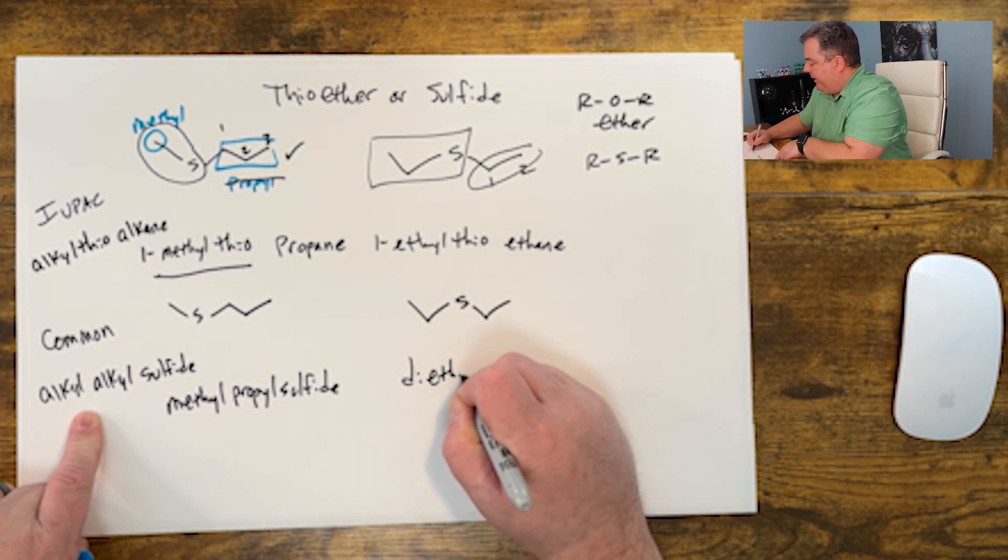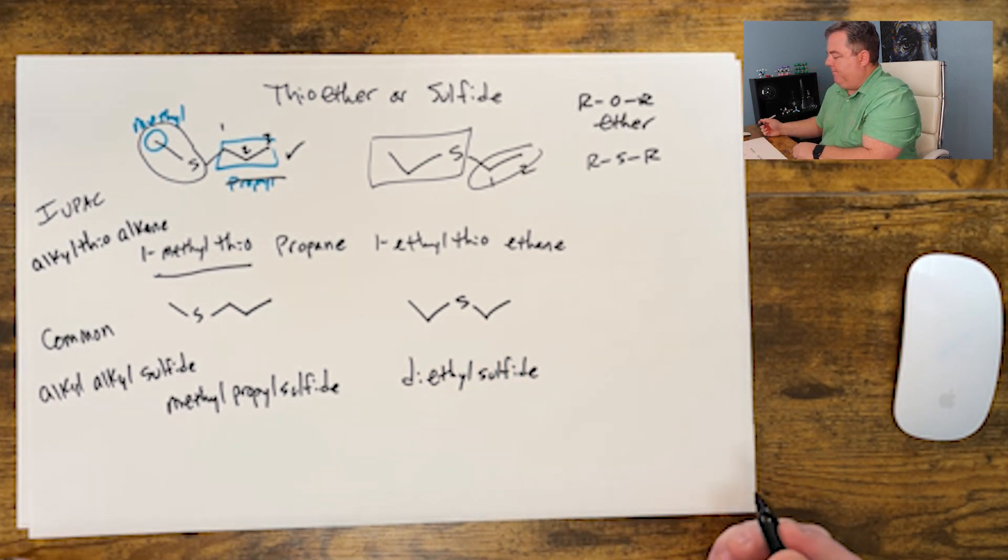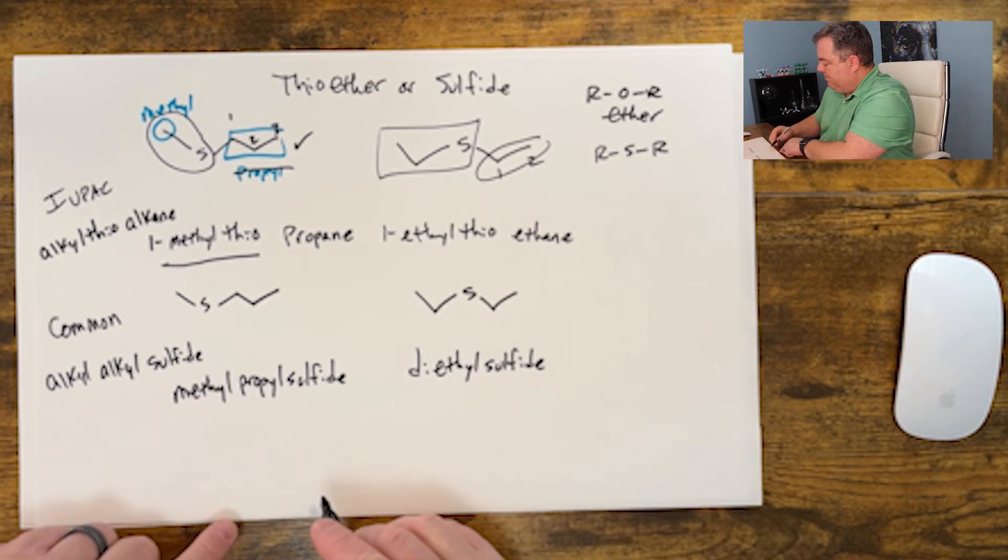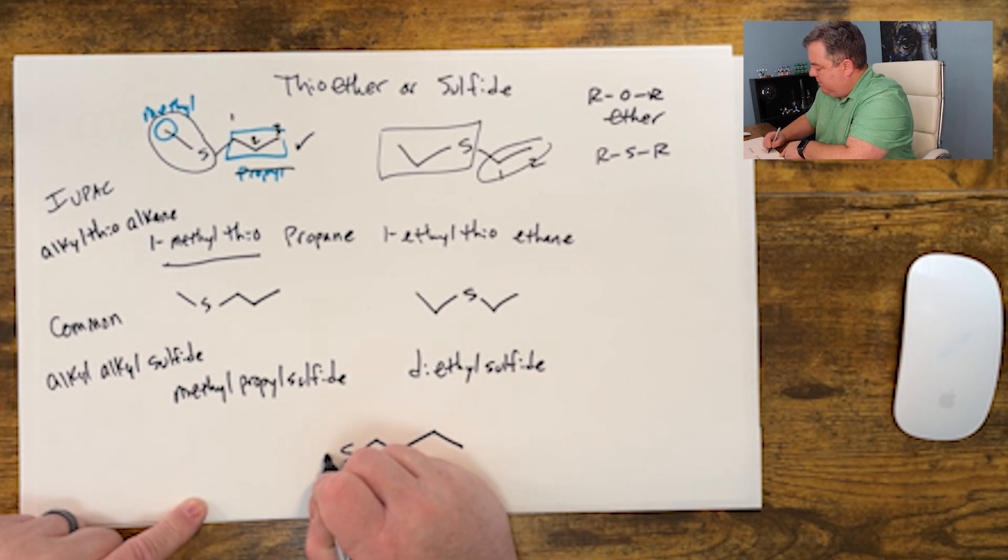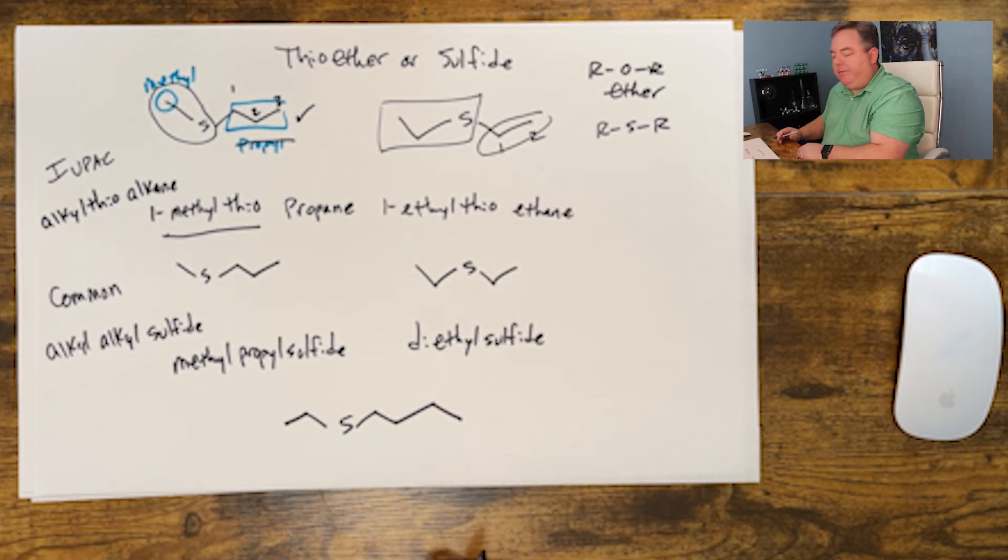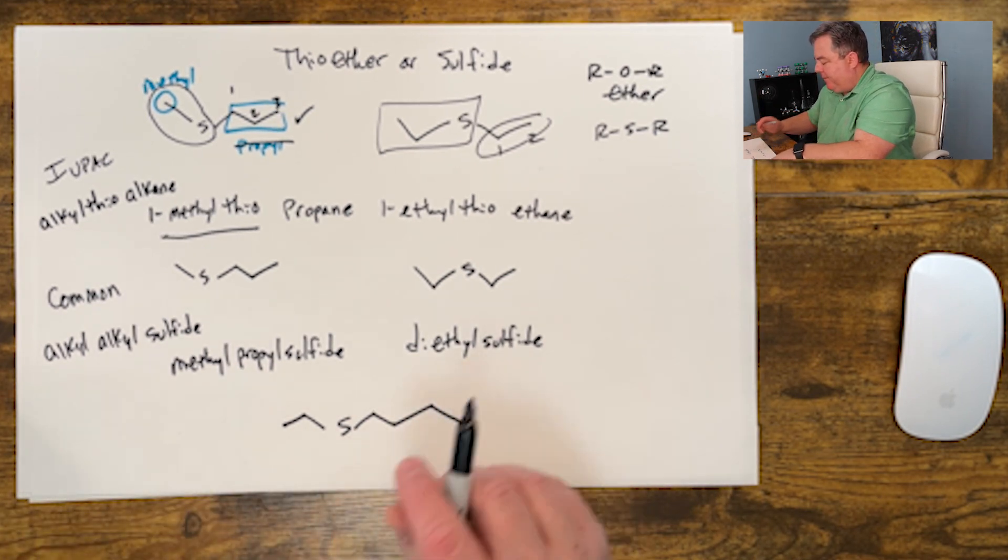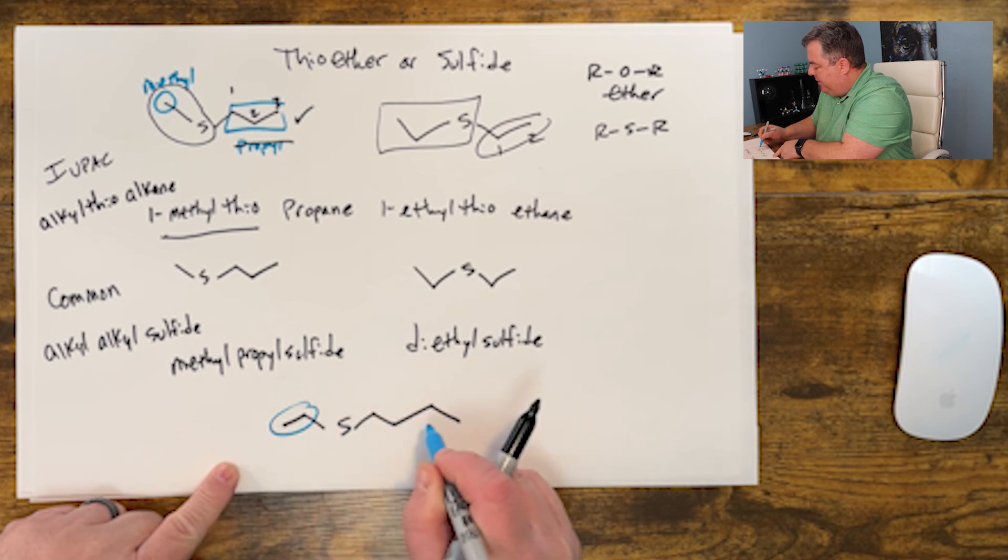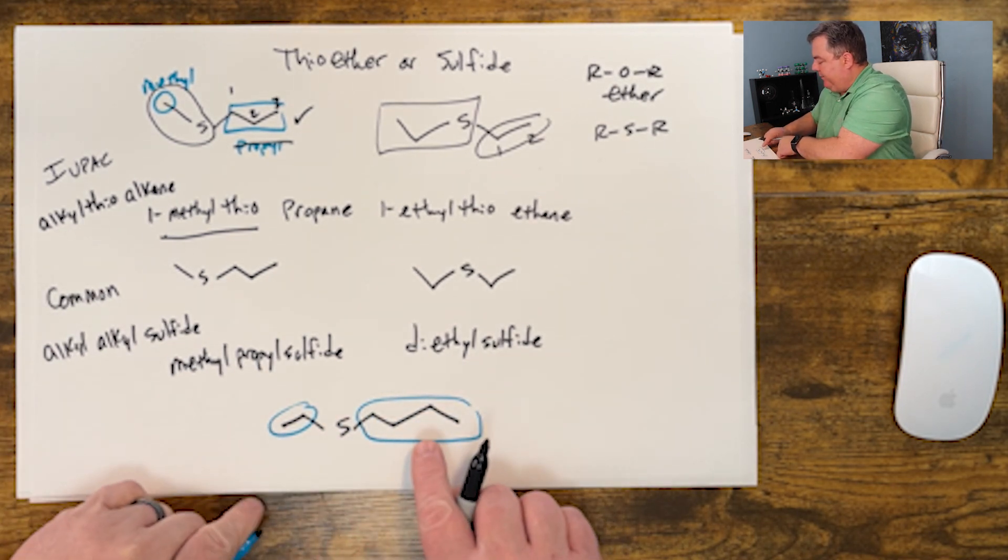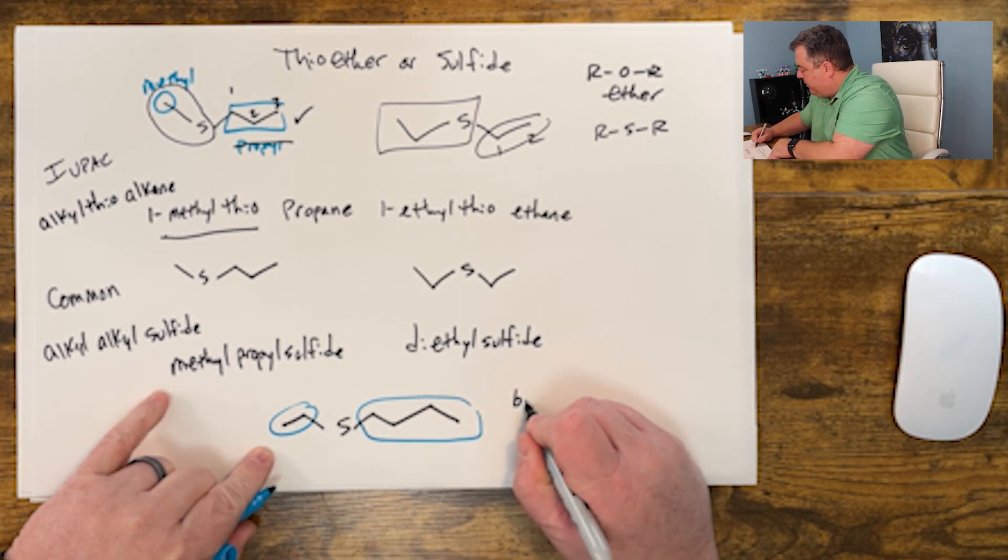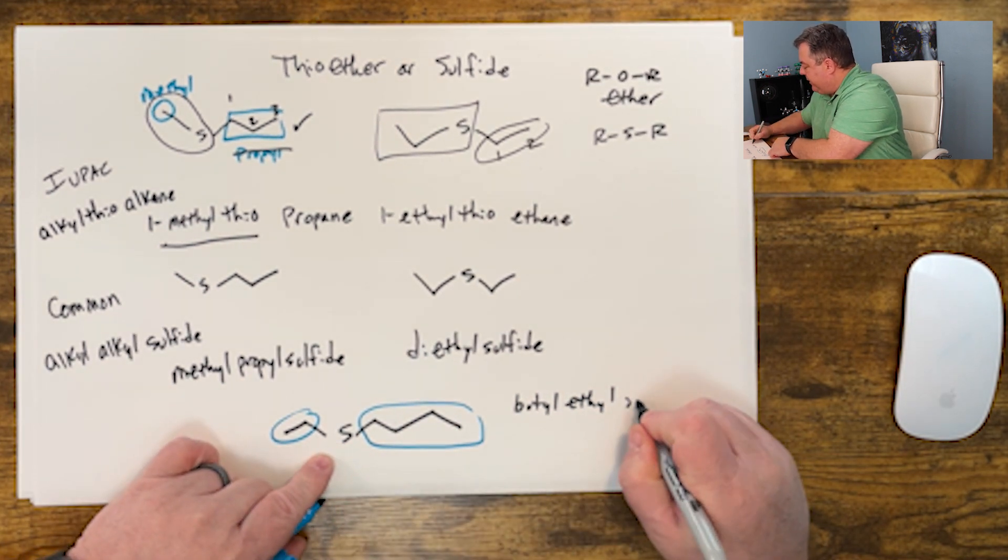Let me give you one more for a bonus. How would we name this group? Let's start with the common way. We have on this side an ethyl group, and on this side we have one, two, three, four carbons: a butyl group. So it's a butyl and an ethyl. Butyl comes first alphabetically, so it's butyl ethyl sulfide.